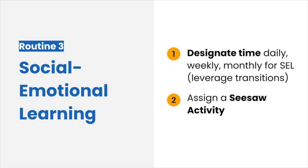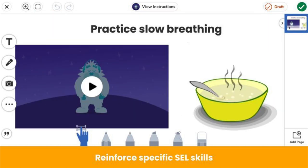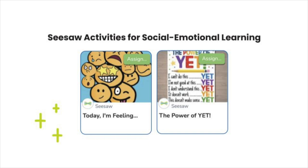Seesaw makes it easy to integrate social-emotional learning. Leverage transitions like the beginning or end of the day, before or after lunch, or between subjects to reinforce important SEL skills. Simply assign a Seesaw activity for students to complete during your designated SEL time. An easy way to start is with a daily or weekly check-in. Students practice identifying and naming their emotions and explaining why they feel that way, so you can follow up with students who may need extra support. You can also find or create activities that reinforce specific SEL skills, like goal-setting, growth mindset, and more. Check out these ready-to-assign activities to get started — get the links in the video description.